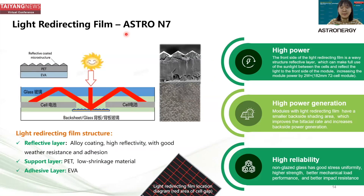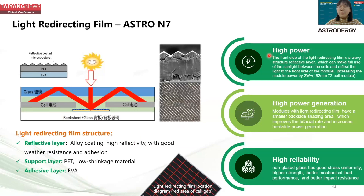For N7, we have some cell gaps. To better utilize light at the cell gap, we adopt light redirecting film to replace traditional wet glazing coating on the rear side of the glass. This film is composed of three layers: a reflective layer made of alloy coating with high reflectivity, a support layer made of PET with low shrinkage, and an adhesive layer made of EVA. This improves bifacial power output by reflecting more light back to the front side, improves power generation by reducing shading on the rear side, and improves reliability through uniform stress.